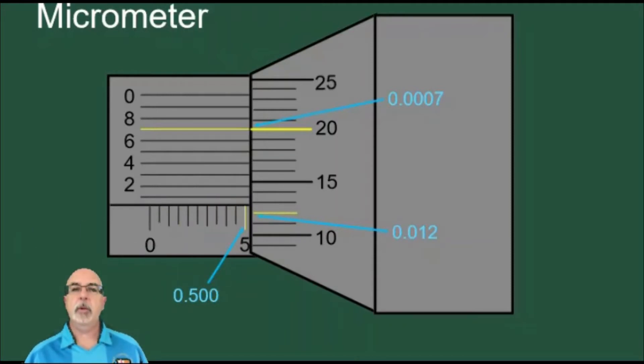The last line that we can see as we read from left to right is the five. There are more lines for six, seven, eight, and nine, but right now they are obscured behind the thimble. As you tighten the micrometer around the object you are measuring, the thimble moves, and it stops you from being able to see some of the lines. This is a good thing because it helps us to make our reading.